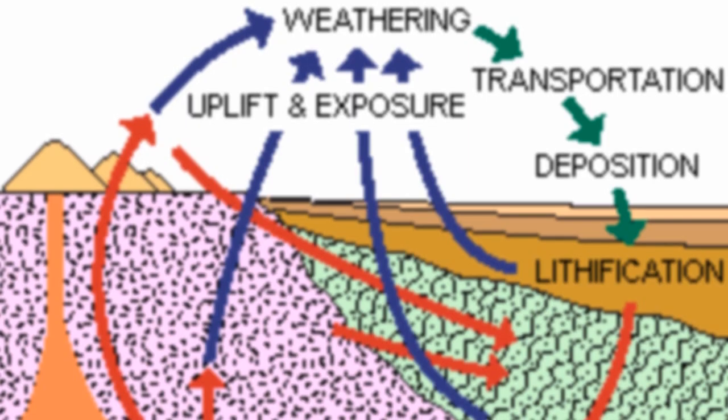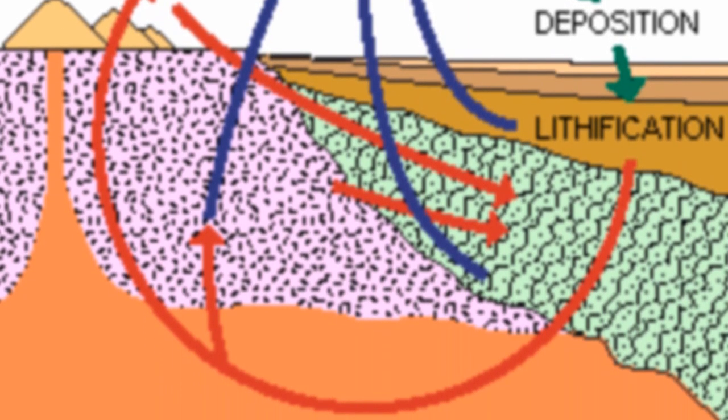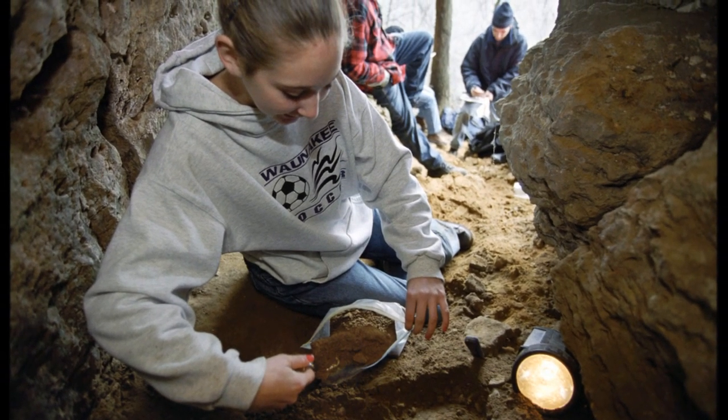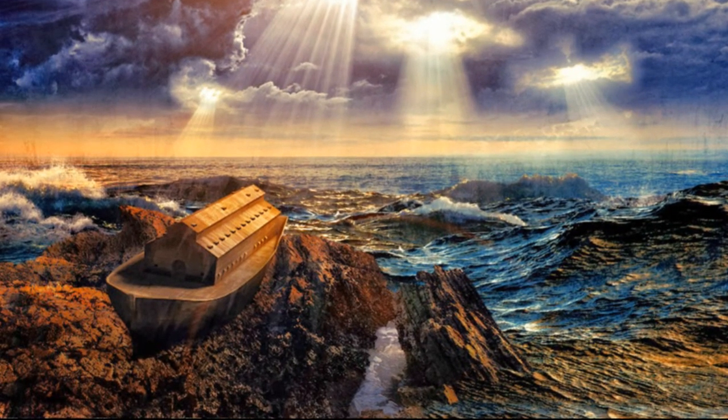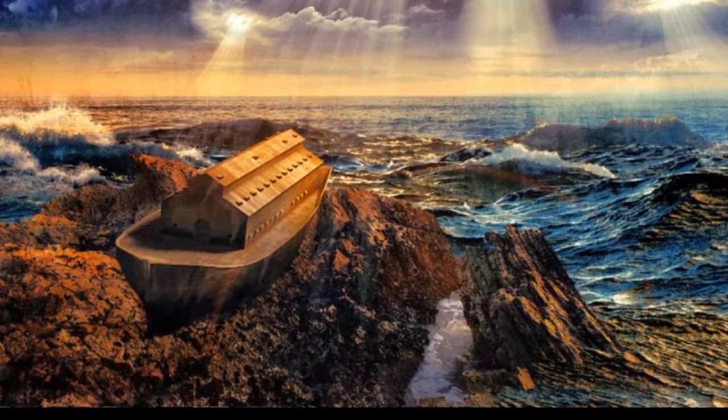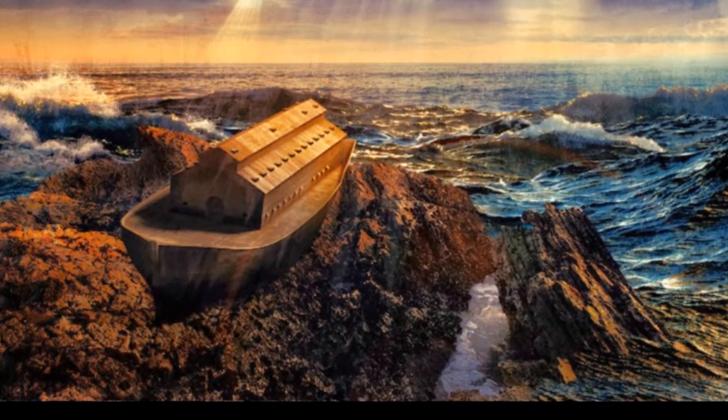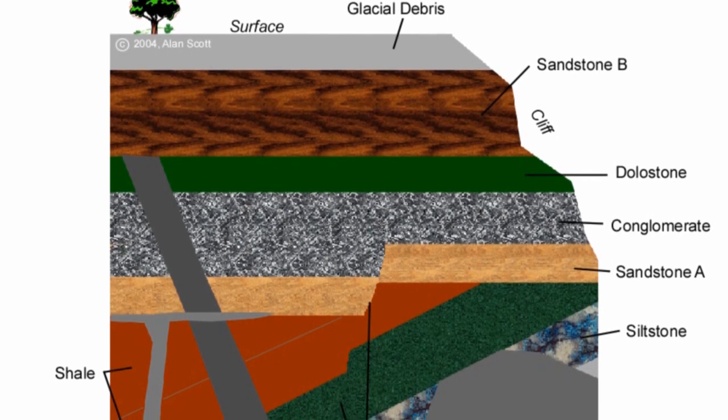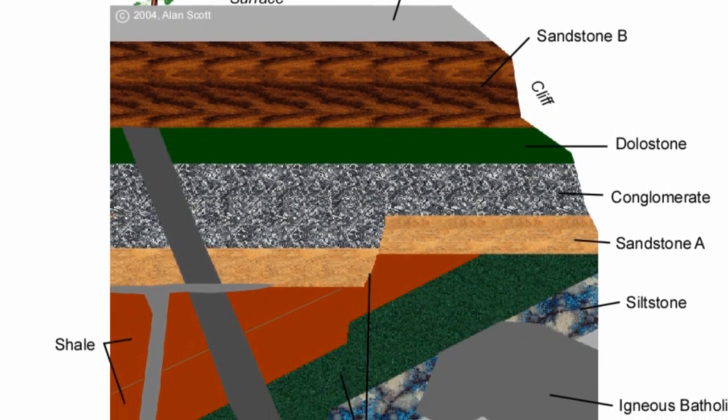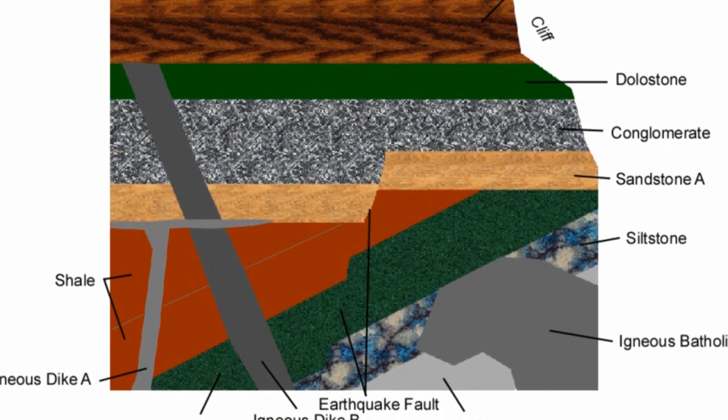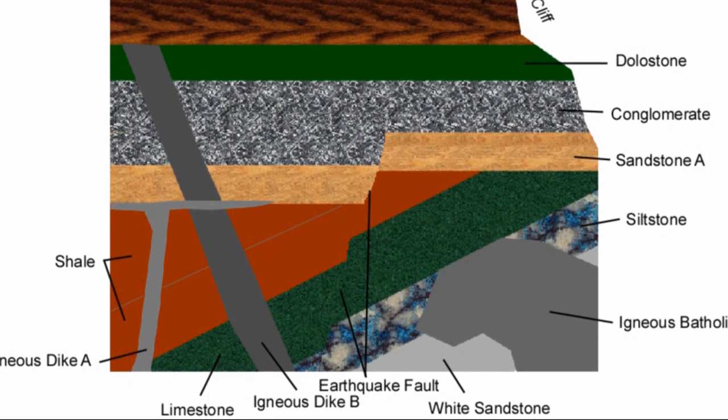When testing flood geology and uniformitarianism against what we find in nature, we realize that they make two separate predictions. If all of the material in the strata were deposited in a single worldwide flood, we would expect to find roughly the same proportions of isotopes to daughter elements throughout the strata. If uniformitarianism is true and all of the strata were deposited individually over time, we should expect to find that the ratios of daughter elements to isotopes will increase as we examine older and older strata.